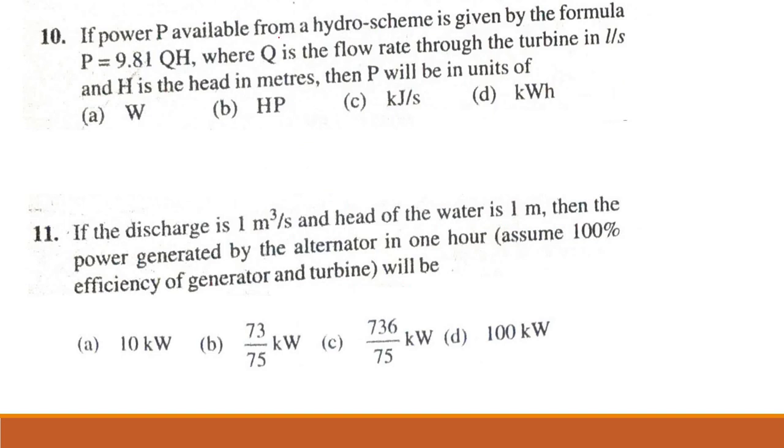Problem 10. If the power P available from a hydro scheme is given by the formula P = 9.81 × Q × H, where Q is the flow rate through the turbine in liters per second and H is the head in meters, then P will be in units of watts. Option A is correct.